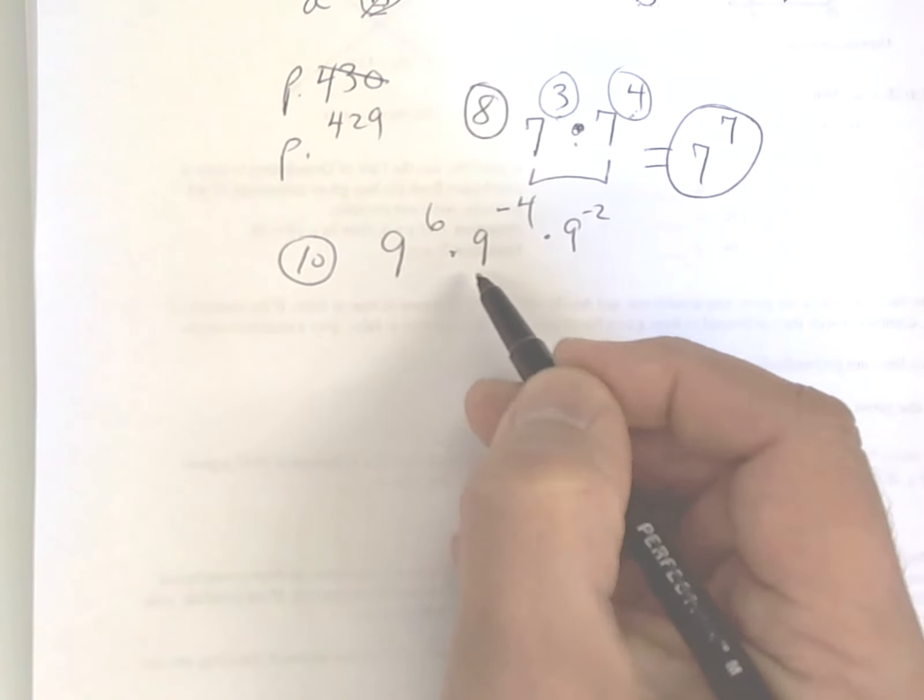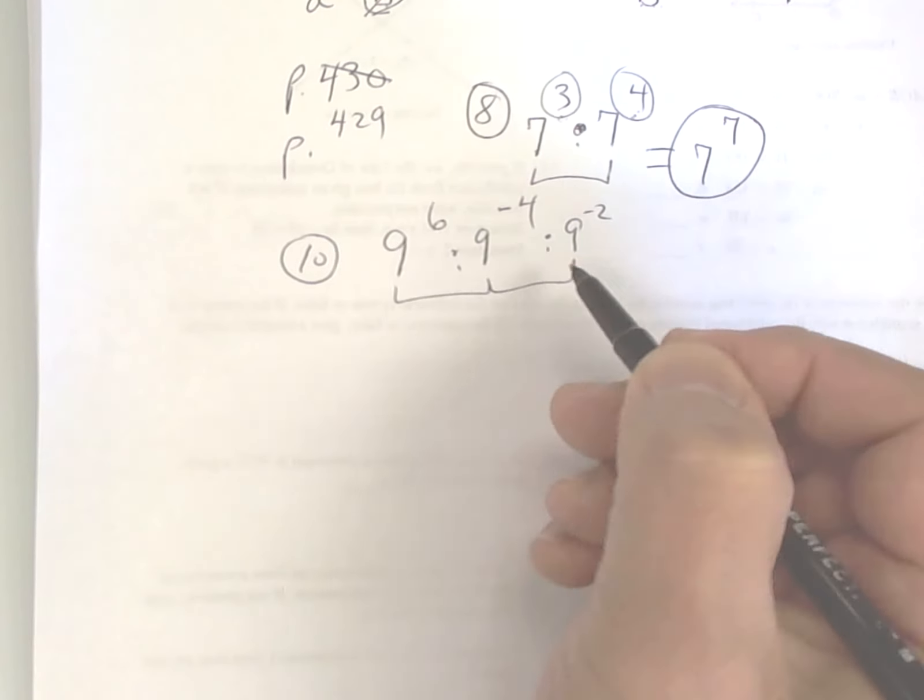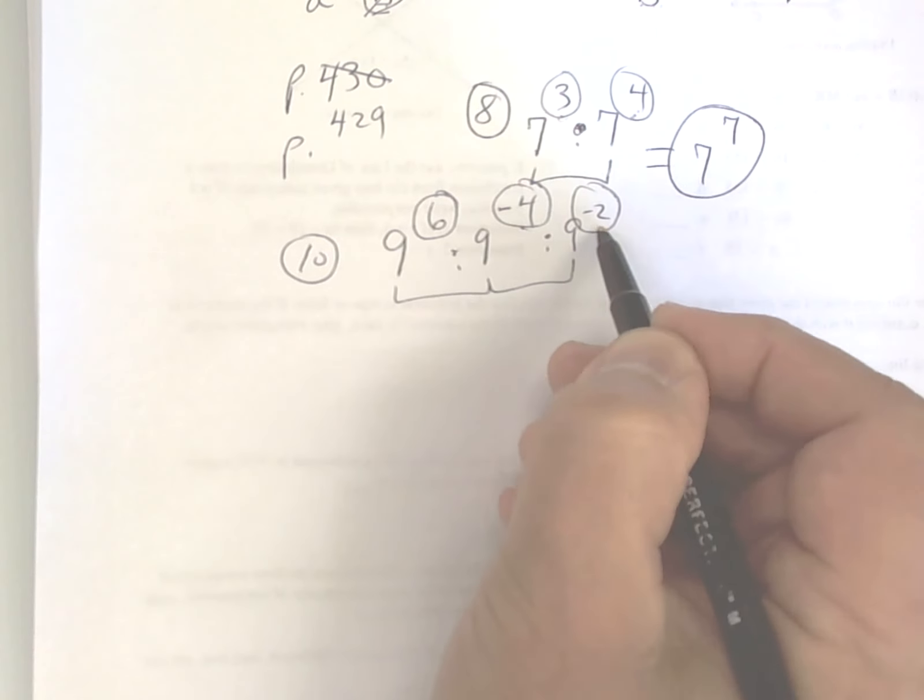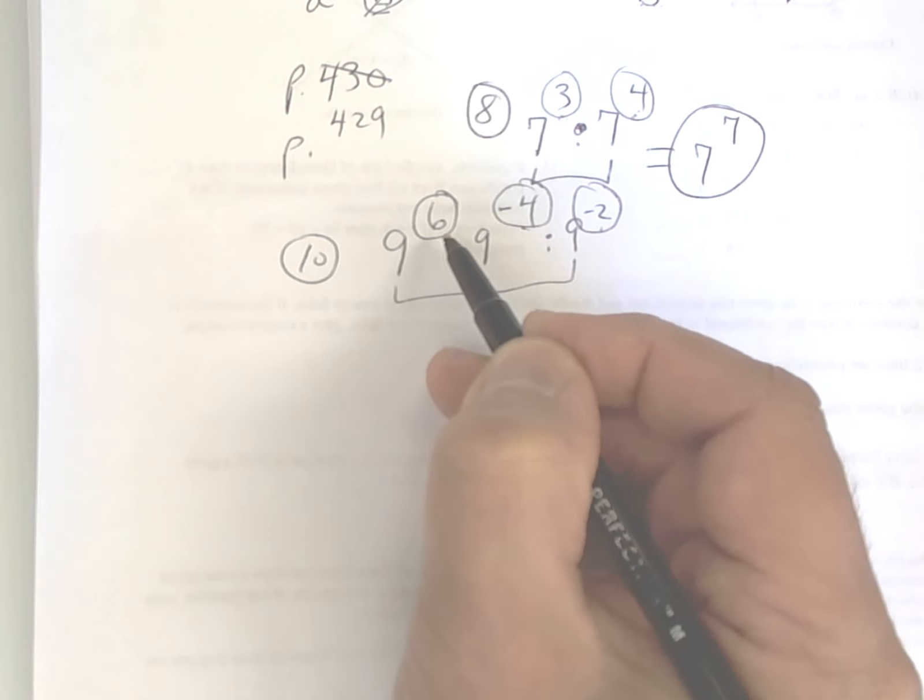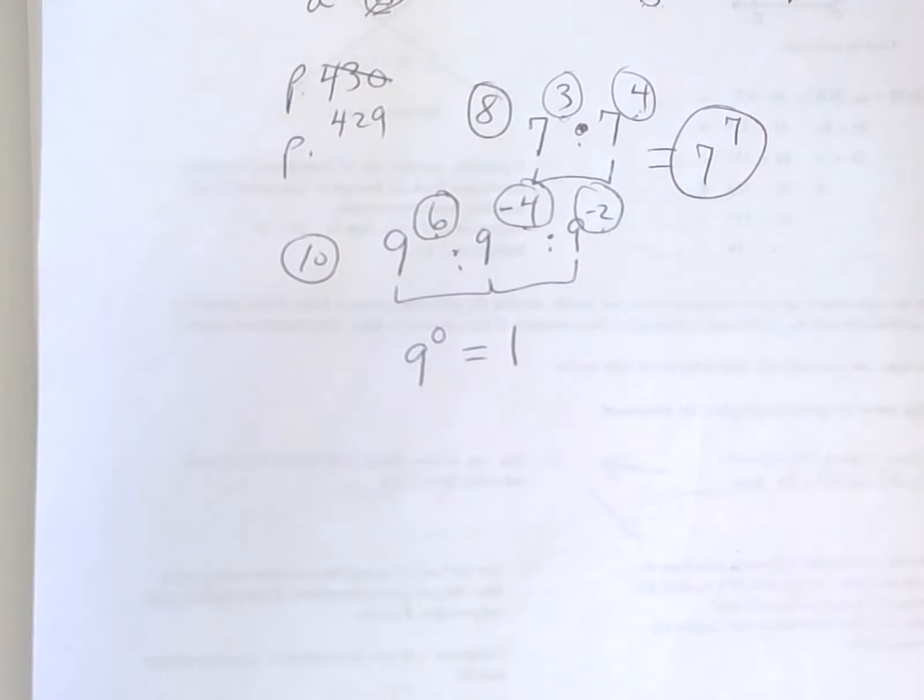Okay, you see how you're multiplying, you see how the bases are all the same? You add these up. A negative 4 and a negative 2 is a negative 6. A negative 6 plus 6 is zero, and anything to the zero power is one.